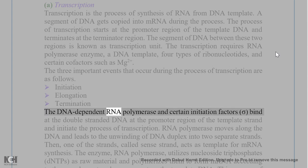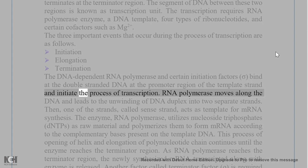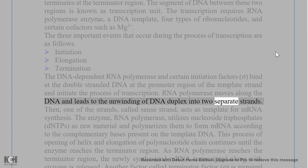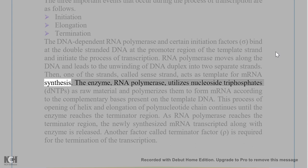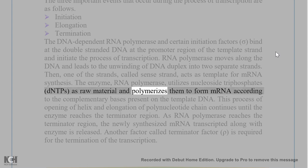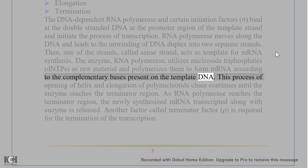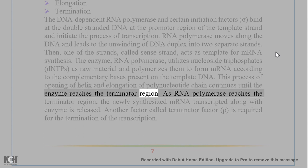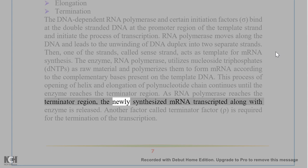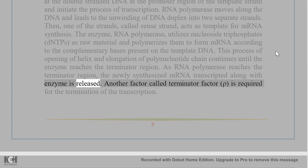During initiation, DNA-dependent RNA polymerase and sigma factor bind at the promoter region of the template strand. RNA polymerase moves along the DNA, unwinding the duplex; one strand — the sense strand — acts as template for mRNA synthesis. The enzyme polymerizes nucleoside triphosphates (NTPs) to form mRNA according to complementary bases on the template. This continues until the enzyme reaches the terminator region, where the newly synthesized mRNA is released. A terminator factor, Rho, is required for termination of transcription.